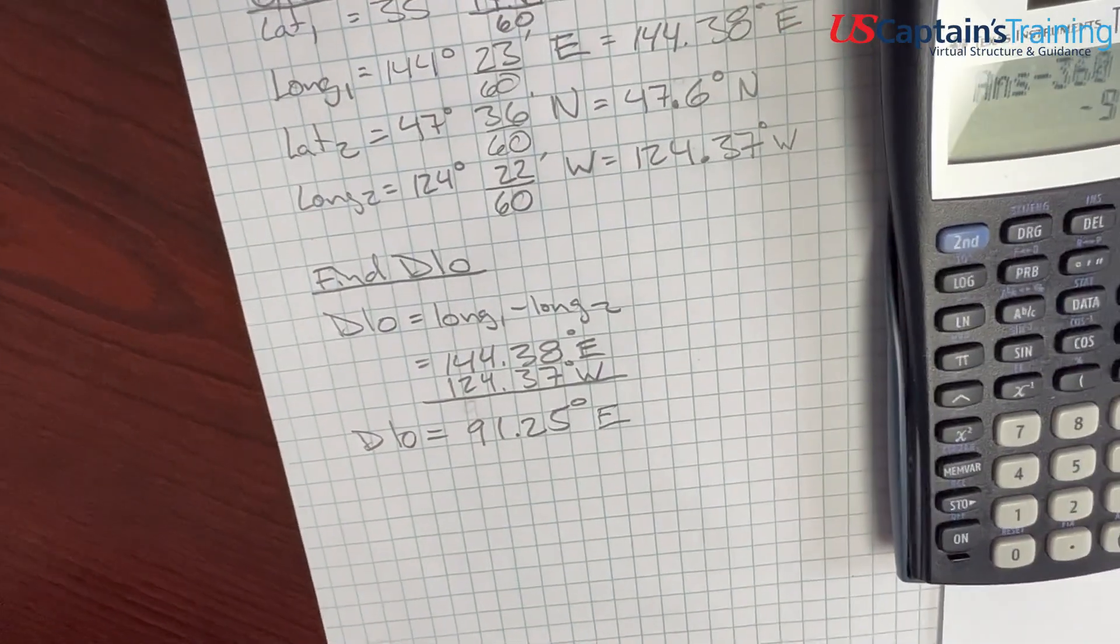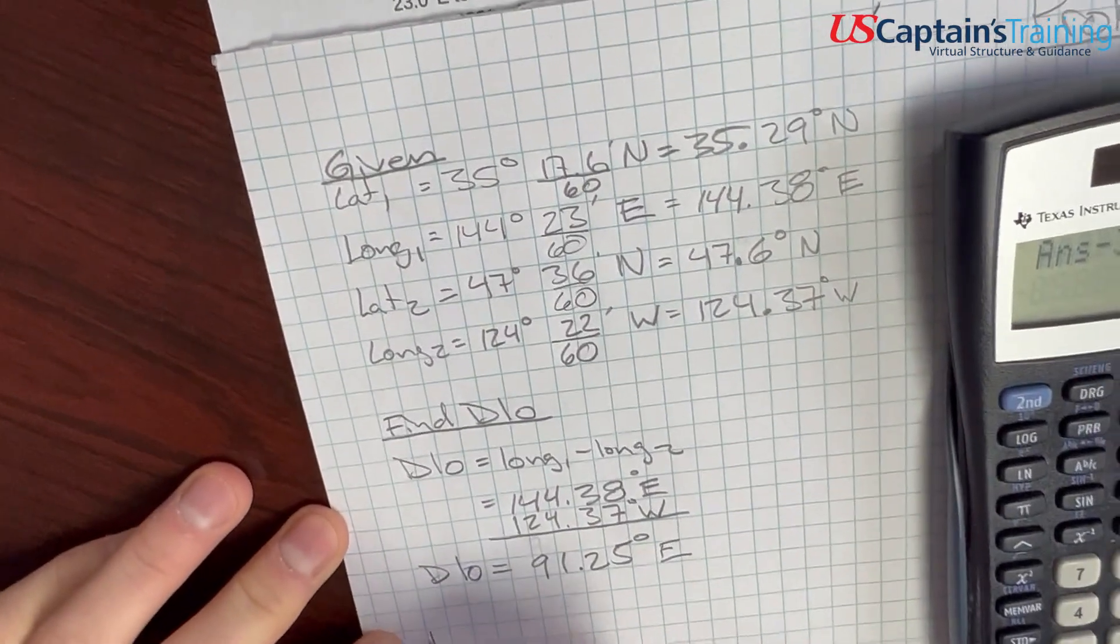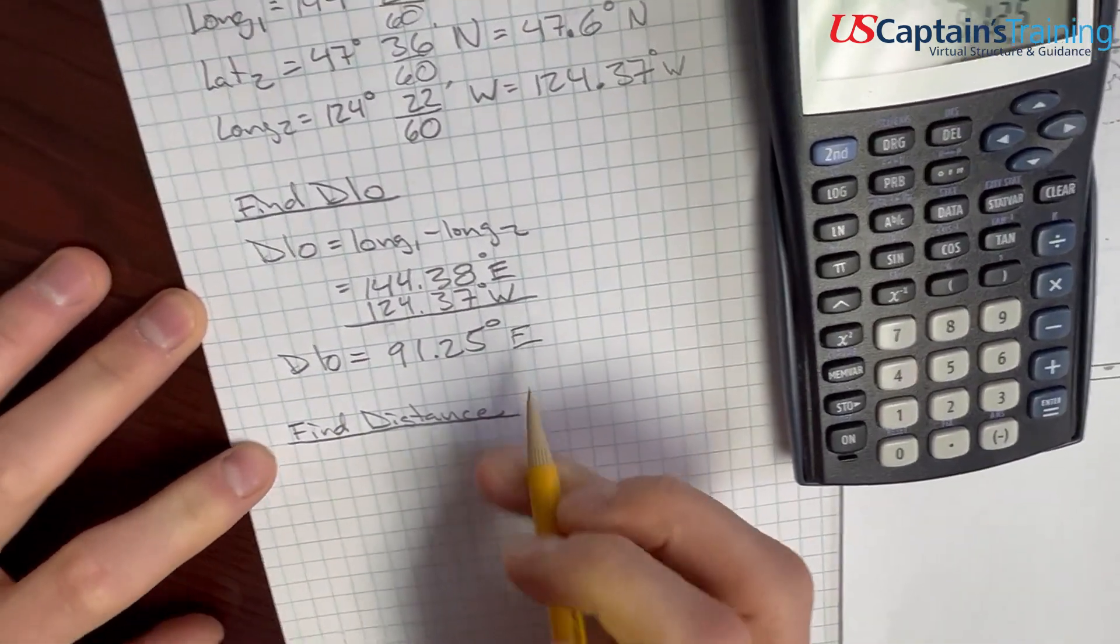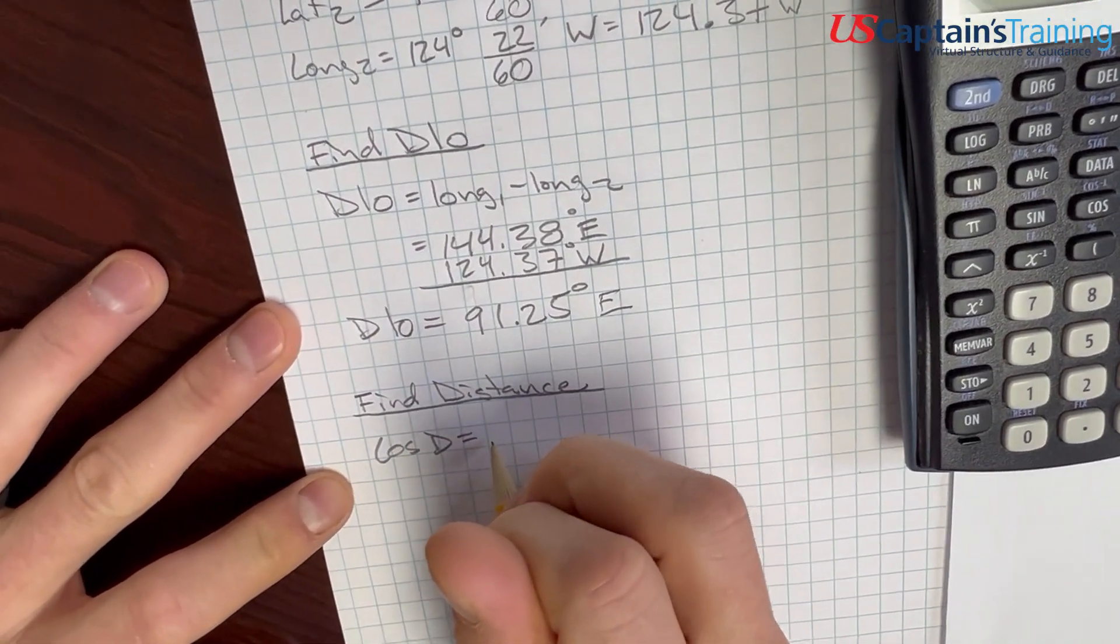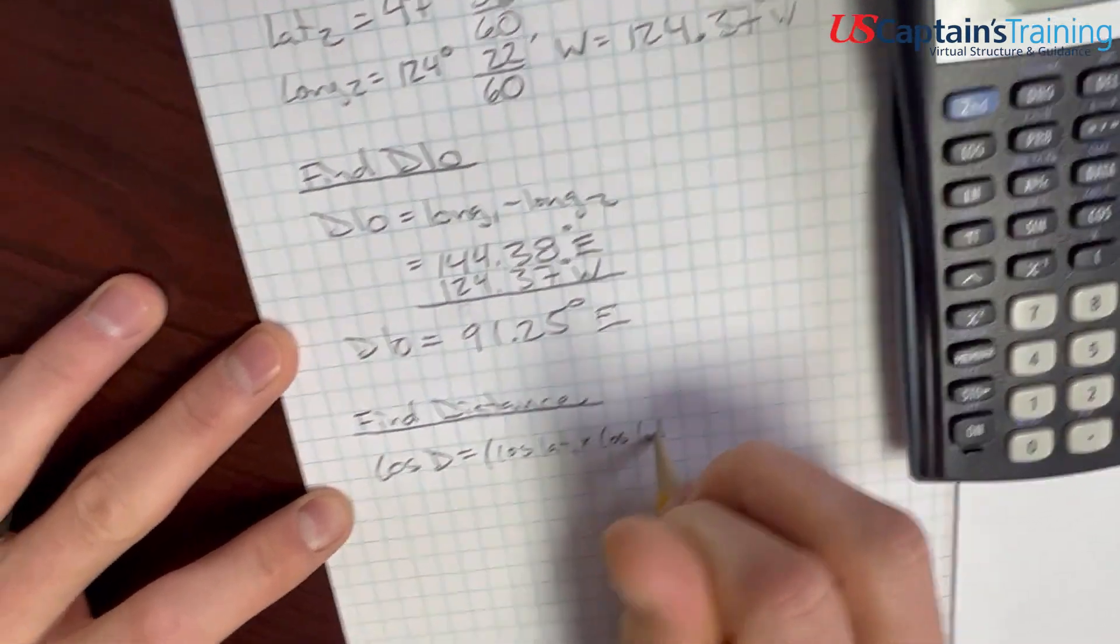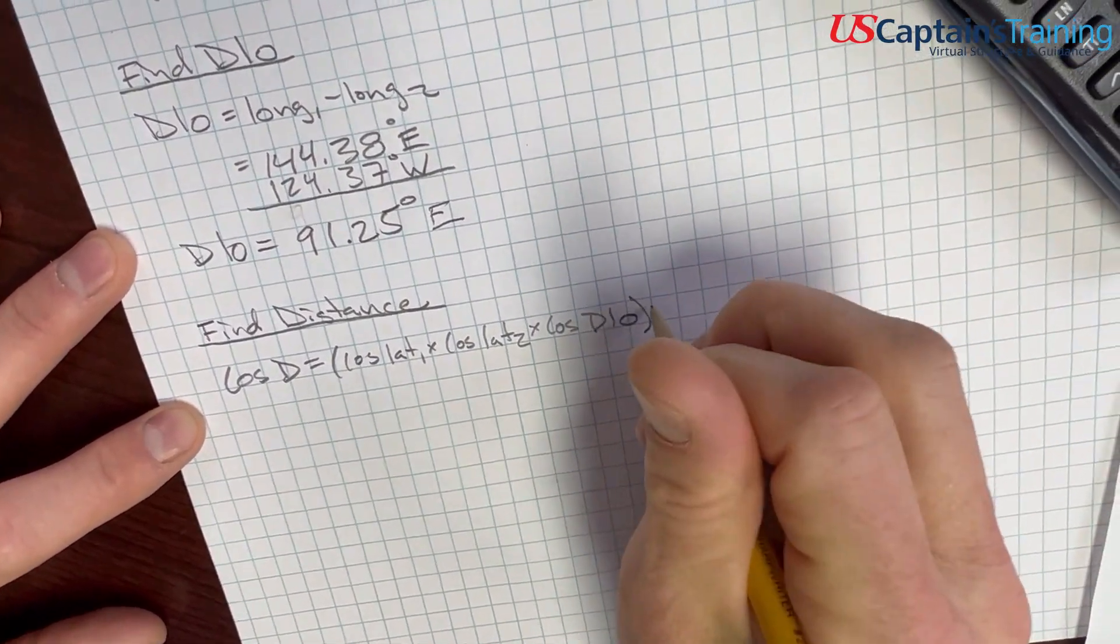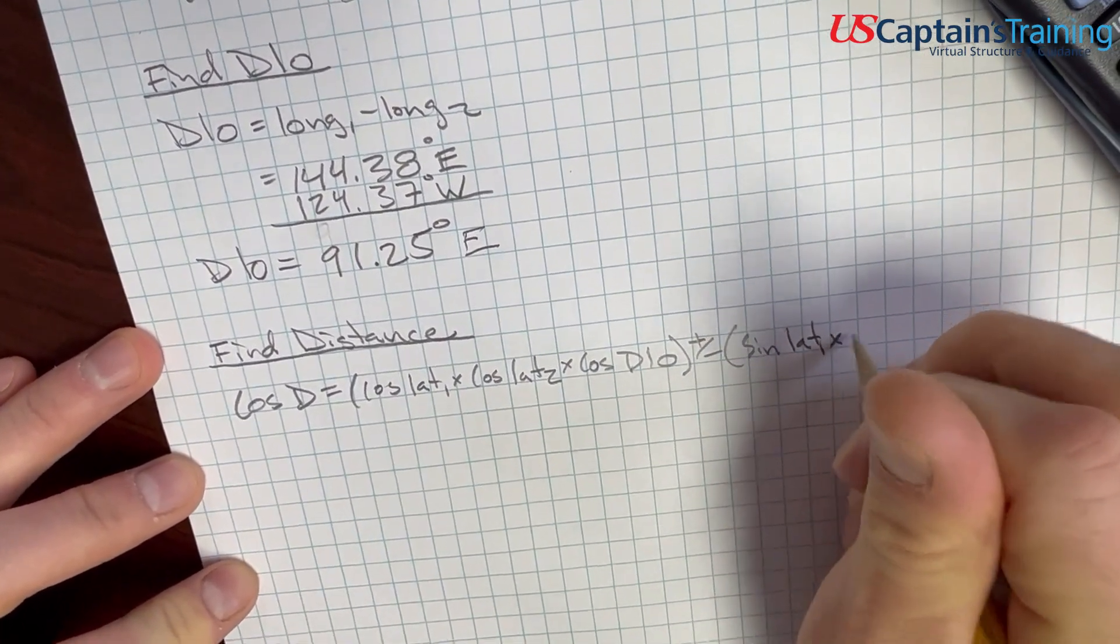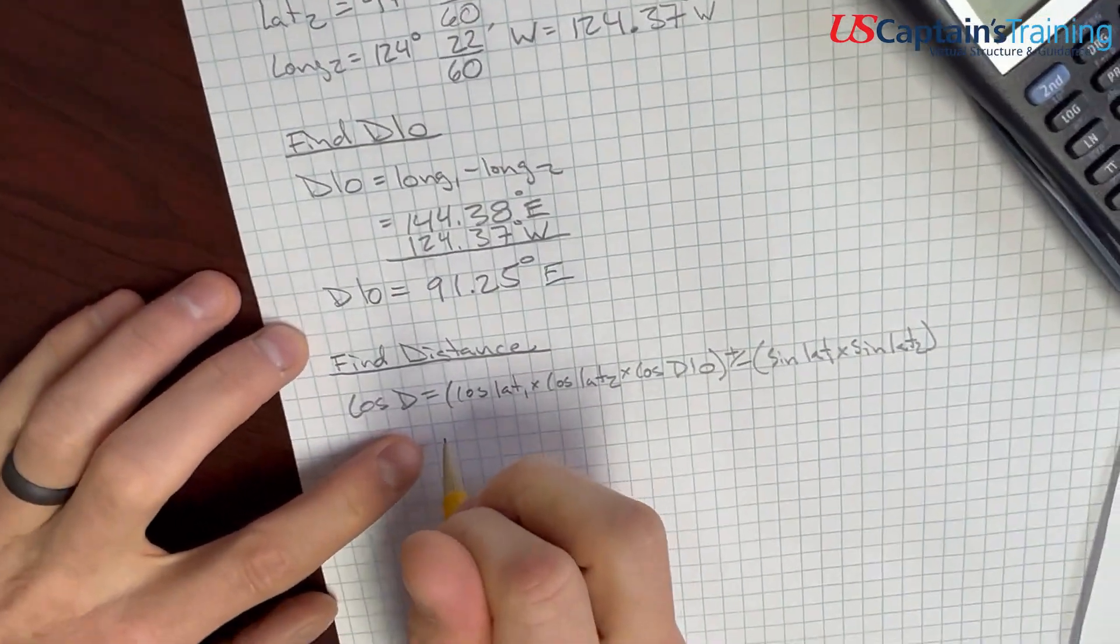Now, we need to throw this into a formula to find distance. So, we are going to find distance. And, I'm going to refer to distance with the letter D. So, here is the formula to find distance. It's cosine distance equals cosine lat 1 times cosine lat 2 times cosine D low plus or minus sine lat 1 times sine lat 2.